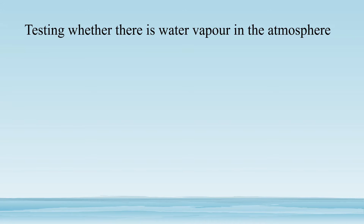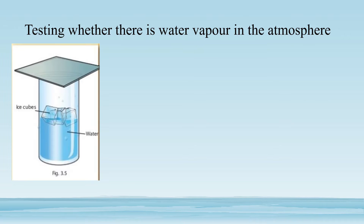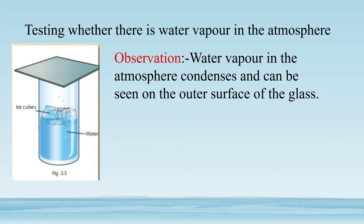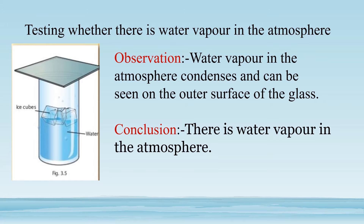Now we are going to test whether there is water vapor in the atmosphere. Fill half a glass with water and observe the outer surface of the glass after some time. Then put some ice cubes into the same glass and close it with a piece of cardboard. Observe the outer surface of the glass after some time. The observation is: water vapor in the atmosphere condenses and can be seen on the outer surface of the glass. Conclusion: there is water vapor in the atmosphere.